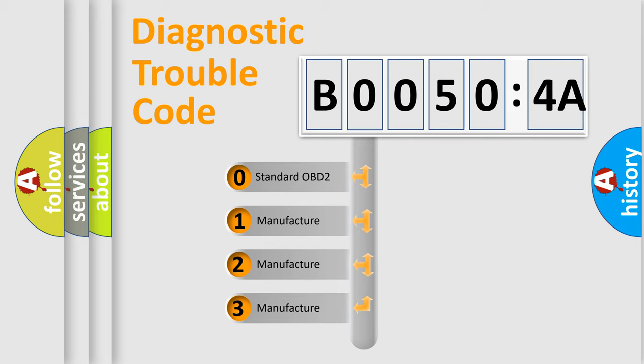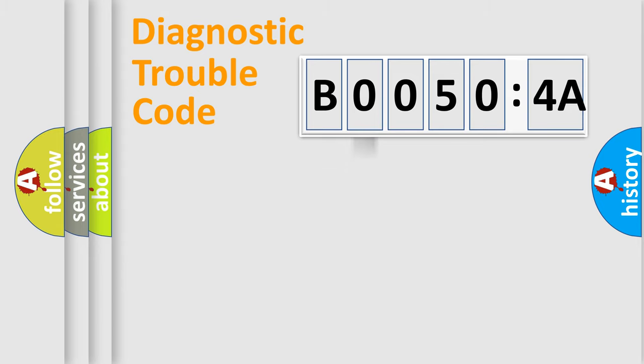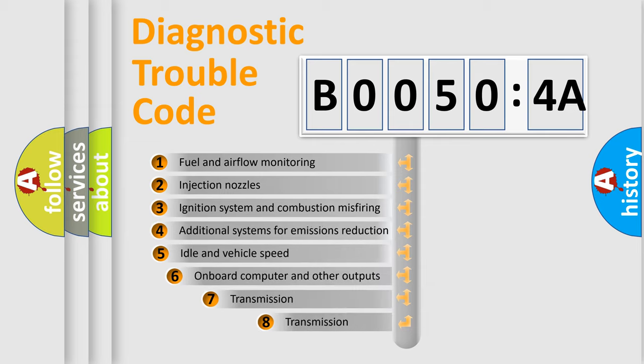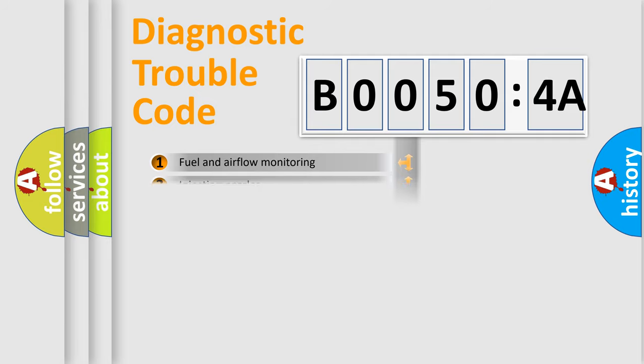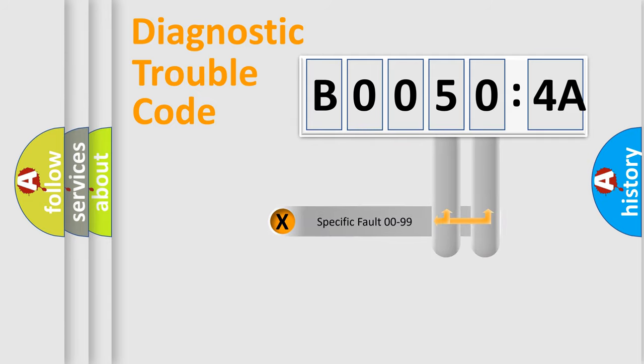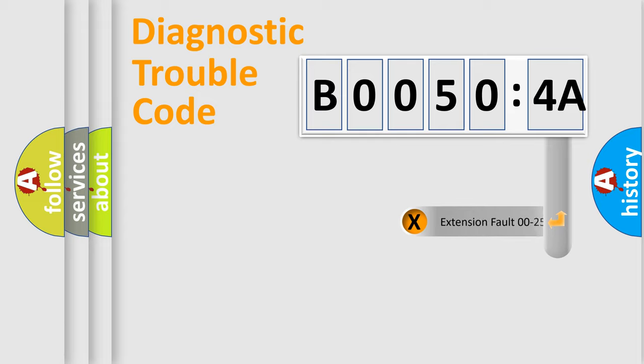If the second character is expressed as zero, it is a standardized error. In the case of numbers 1, 2, 3, it is a manufacturer-specific error. The third character specifies a subset of errors. The distribution shown is valid only for the standardized DTC code. Only the last two characters define the specific fault of the group. The add-on to the error code serves to specify the status in more detail.